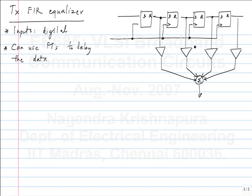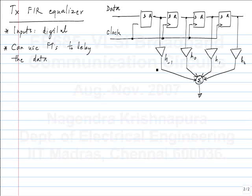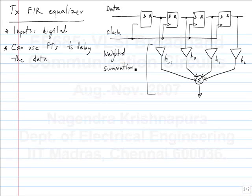All these flip-flops are clocked from the same clock. This could be an equalizer with two post-cursor taps and one precursor tap. Is everyone convinced that this forms an equalizer for the input data? Yesterday we were trying to work out how to realize this weighted summation, and the answer from your basic courses is to use an op-amp. Did you work out the specs of the op-amp? 23 giga radians per second.